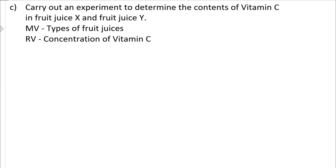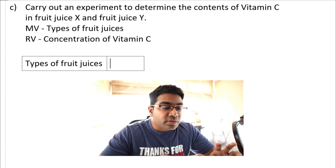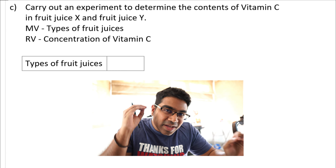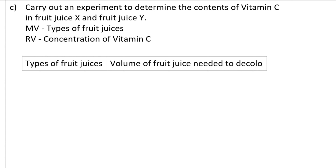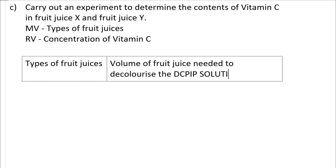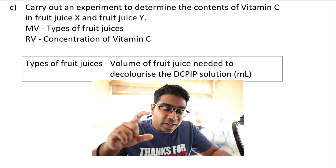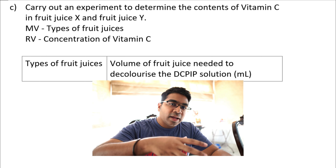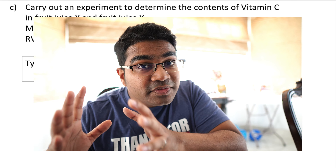For the biology example, start with the MV — types of fruit juices — in the first column. In the second column, you are not directly measuring the concentration of vitamin C; that is done in calculation. What you measure during the experiment is the volume of fruit juice needed to decolorize the DCPIP solution, with units in milliliters since you are using a syringe. You may be required to add another column for concentration of vitamin C.